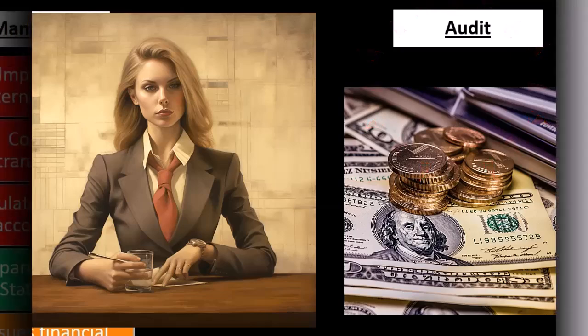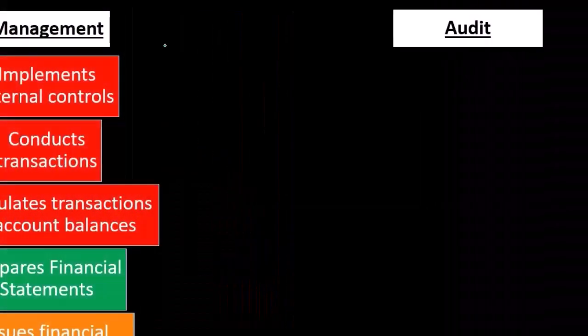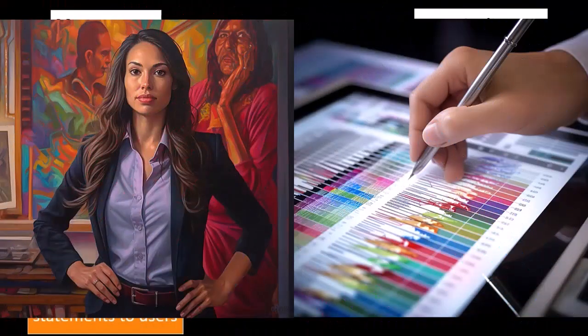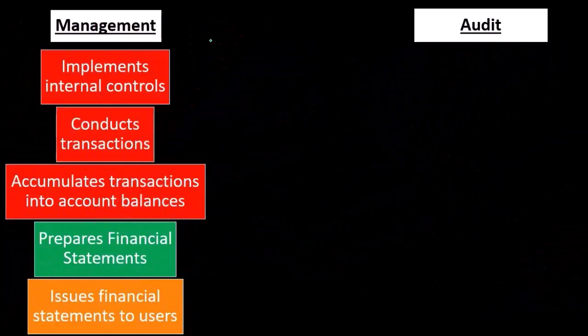So what does the audit do? When you think about the audit coming into play, you're thinking about this having already happened. Management has done these things — the time period has passed or is close to passing when we start to think about what the audit engagement will be doing. When we start to plan the audit engagement, the financial statements are essentially already created. The auditor is then going to be looking into the accuracy of those financial statements.